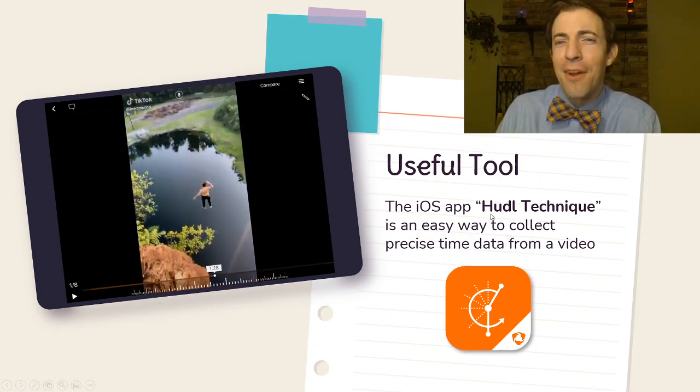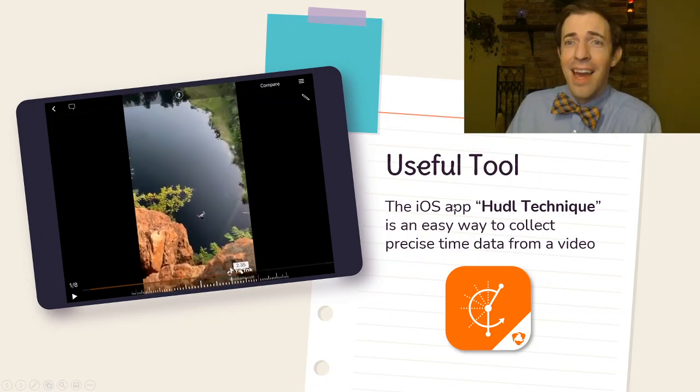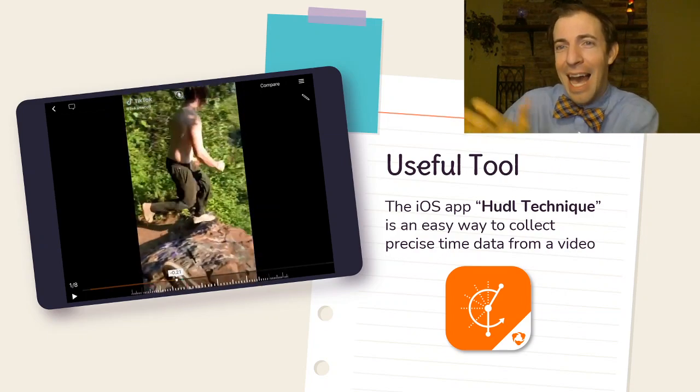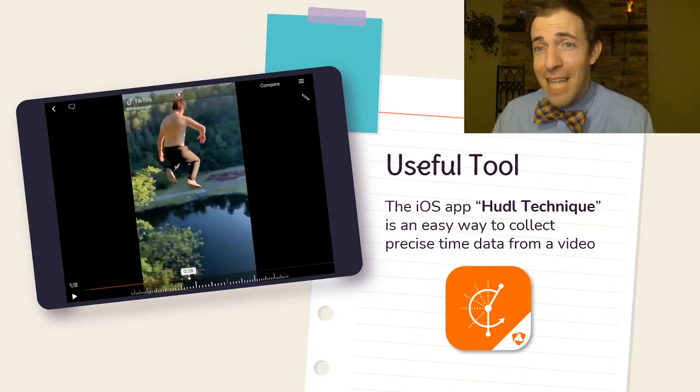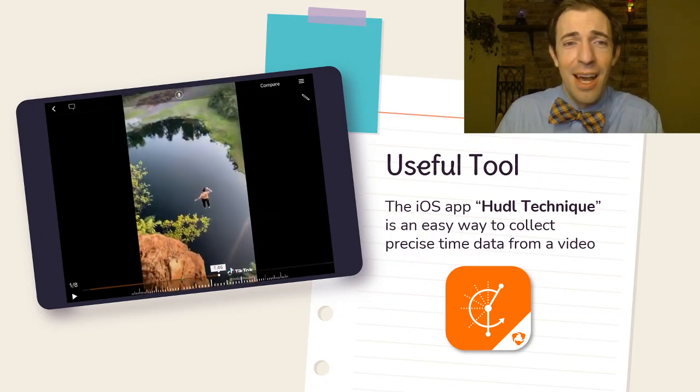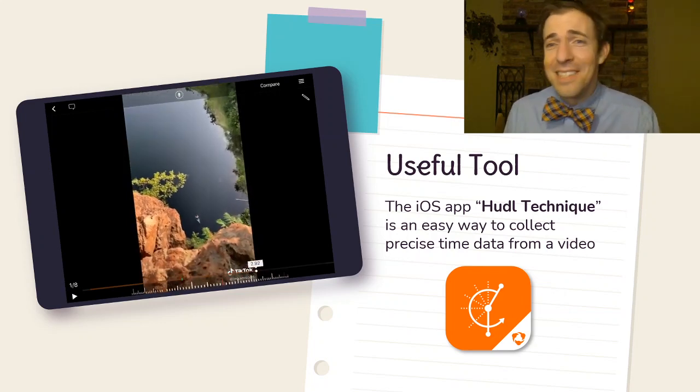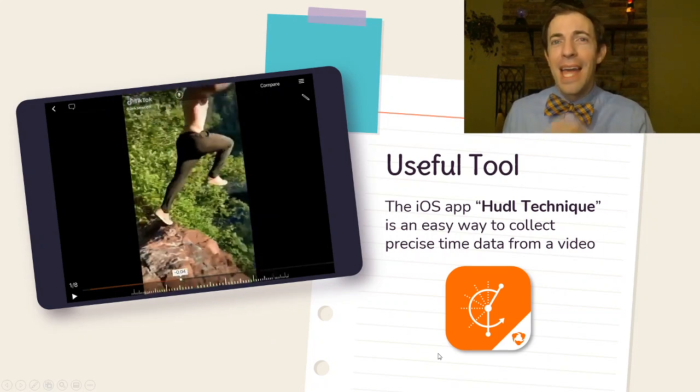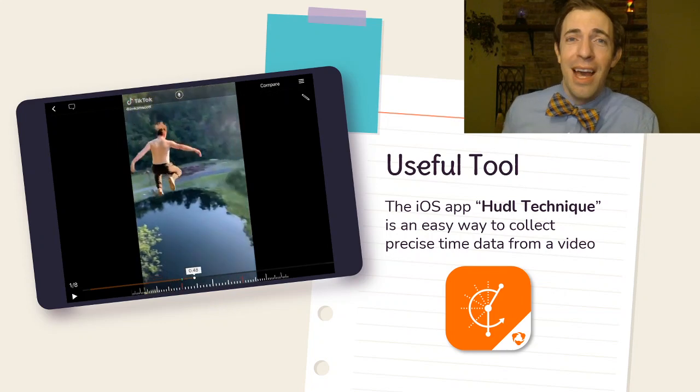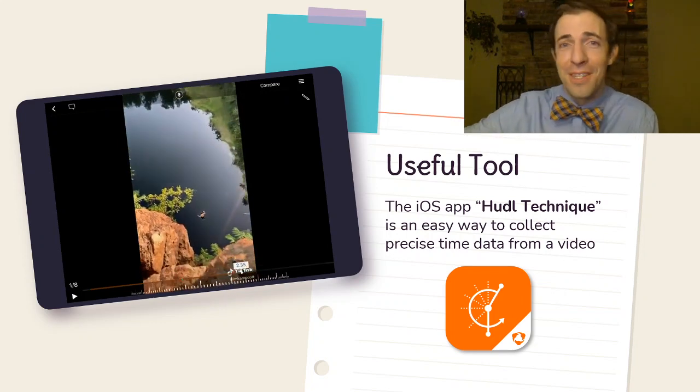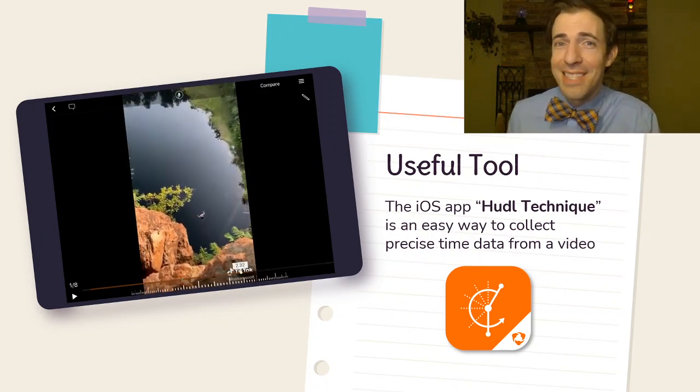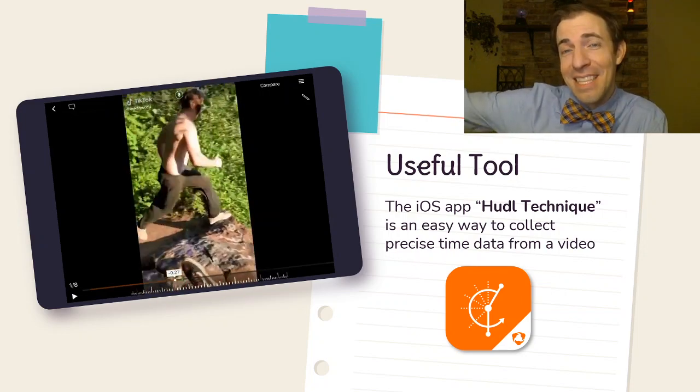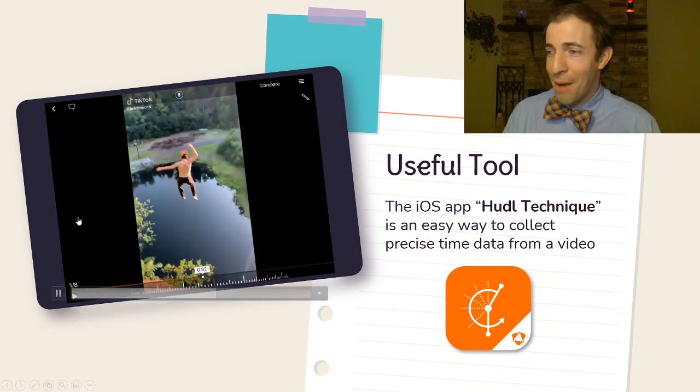In our class we've used the app Huddle Technique. It can be found on iOS. It's free and it's really nice because you can scroll to a particular time in the video and zero out the stopwatch and then scroll to a different time to essentially time an event in a specific video that you've either downloaded or recorded yourself. There are other ways to do this. You could also just use the time scrubber on the video itself. If you use Pivot Interactives that is a tool that can also do this and overlay things like a ruler to measure displacement that way as well. In my classroom we haven't used Pivot Interactives not because I don't think it's amazing but because we just didn't have the time or monetary resources to invest this year in that particular tool so we just found other ways around that like Huddle Technique.